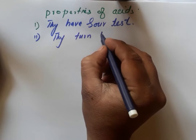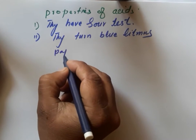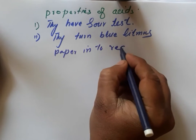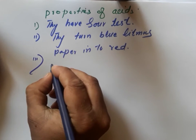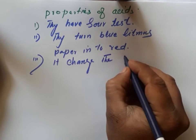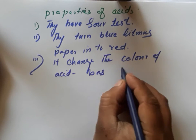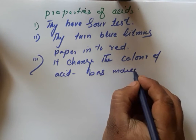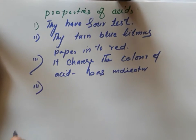Property number two: acids turn blue litmus paper red. They change the color of the acid-base indicator.